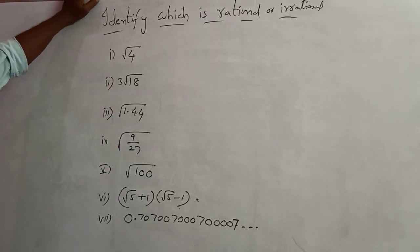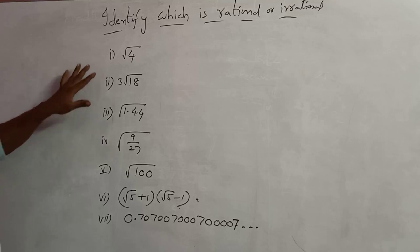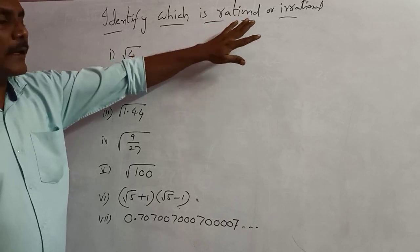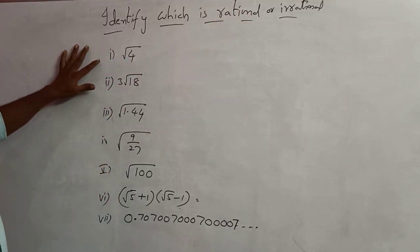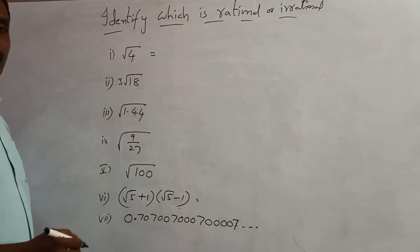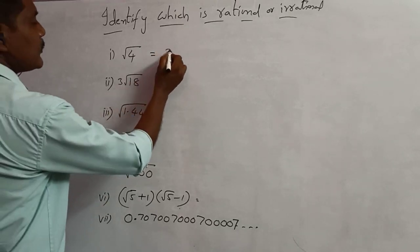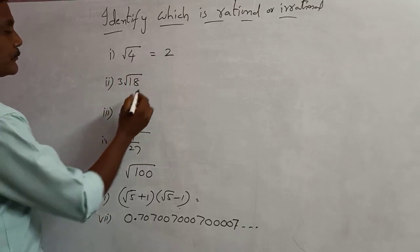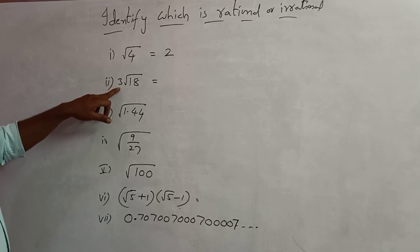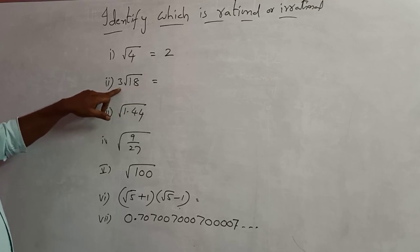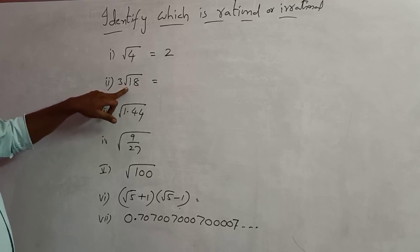I will write some more examples to understand and differentiate the rational and irrational. You have to find which is rational and which is irrational. First example: root 4. Do you know the square root of 4? Easily — 2. 2×2=4. Therefore square root of 4 is equal to 2. Another example: 3 times root 18. We have to simplify this to find whether it is rational or irrational.